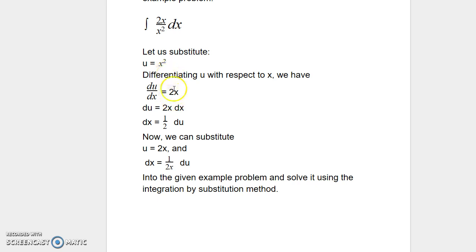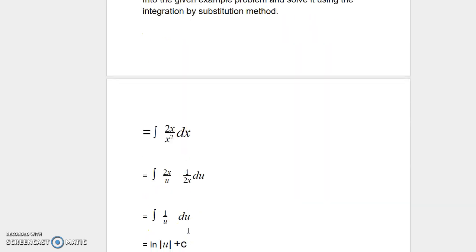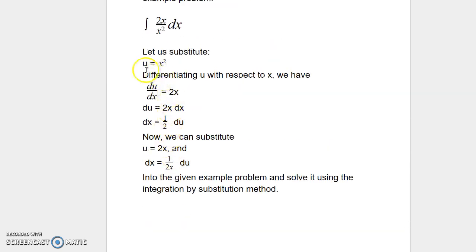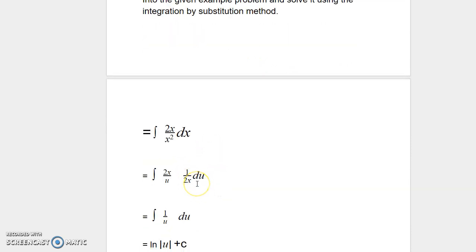We substitute u equal to x squared — there is a small correction here — and dx equals 1 over 2x du into the given example problem. Our example is integral 2x over x squared dx. Wherever we see x squared, we write it as u, and wherever we see dx, we write it as 1 over 2x du.